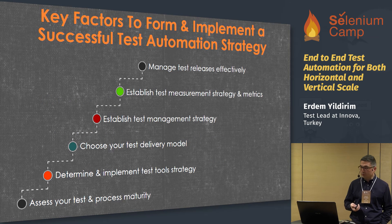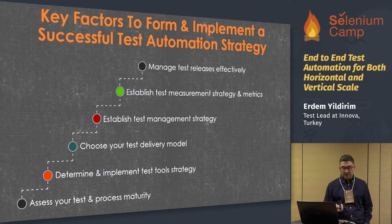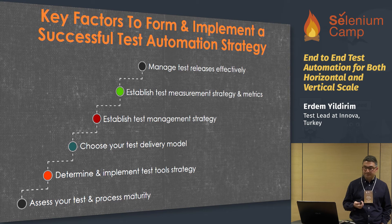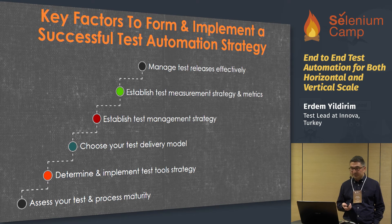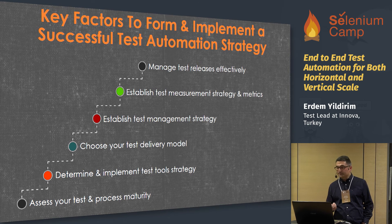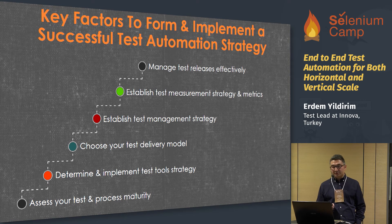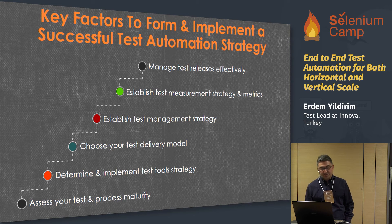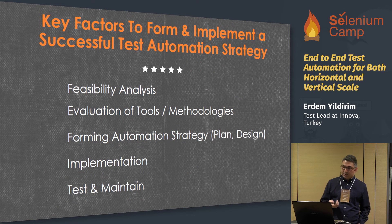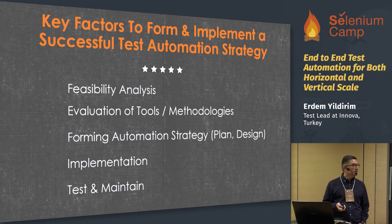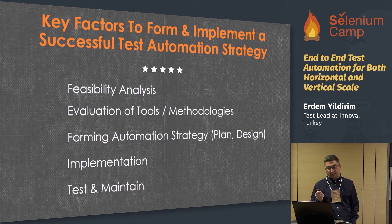These are the steps you should consider to form an automation strategy. First, assess your test and process maturity. Determine and implement a test tool strategy. Choose your test delivery model. Establish a test management strategy. Establish test measurement strategy and metrics. Manage test releases effectively. In a nutshell, we should work on these topics, and the most important one is the first.